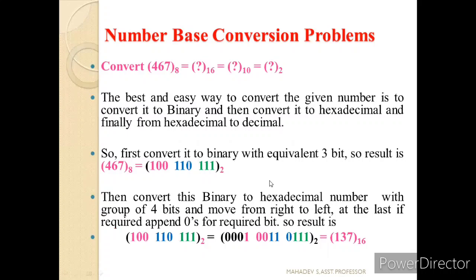Let us understand with another example. Convert 467 octal to hexadecimal, decimal, and binary. The method remains the same. Since the given number is in octal, we first convert it to binary with groups of three bits: 4 is 100, 6 is 110, 7 is 111. So 467 octal equals 100110111 in binary.